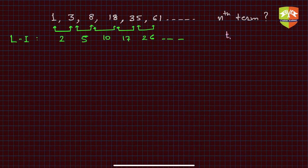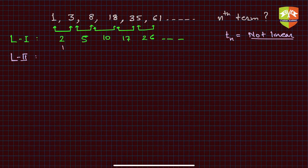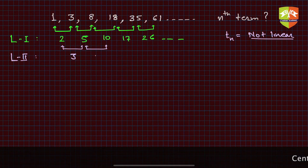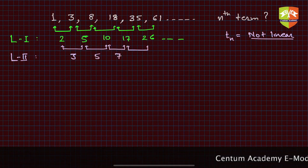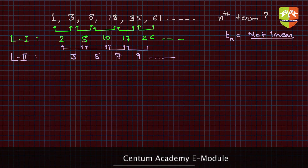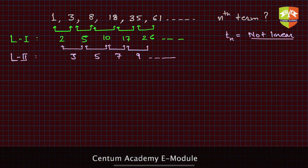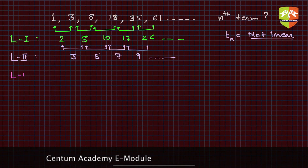The level 1 difference is not constant, so we can't say it is linear — we can't have a linear expression for T(n). Let's analyze the second level difference — the difference of differences. Those come out as 3, 5, 7, 9 — all odd numbers, showing a trend but not constant. So we go to the third level difference.